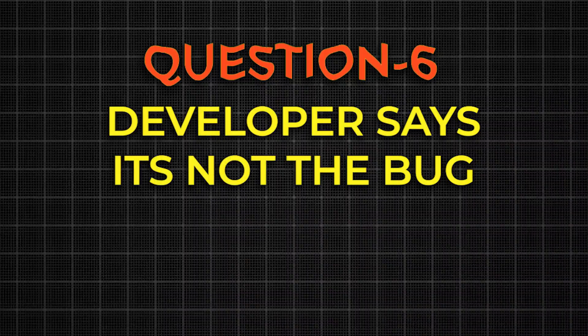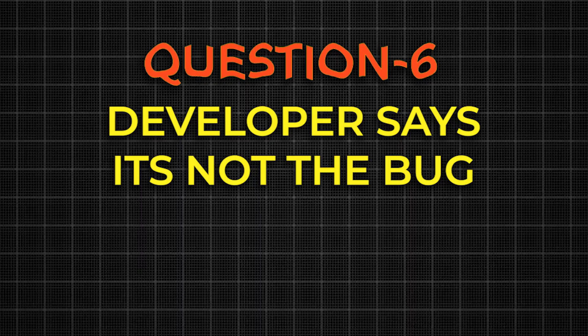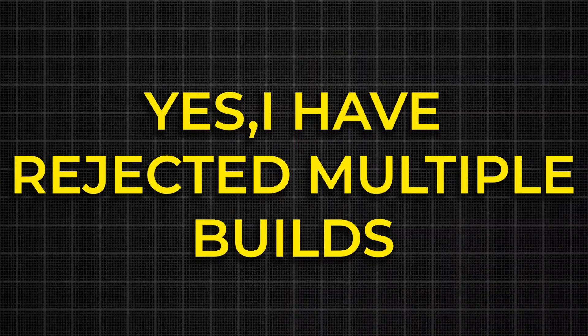If the developer says it's not a bug, properly communicate, add logs, add a proper bug report, and include more people. If you believe there is a deviation from the requirement, add the bug and add your QA lead too — they will take action.